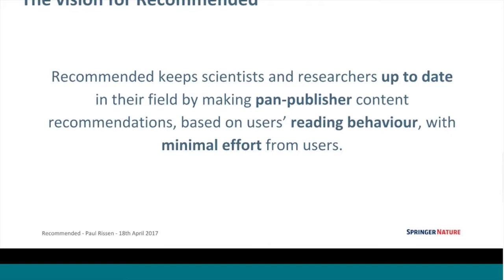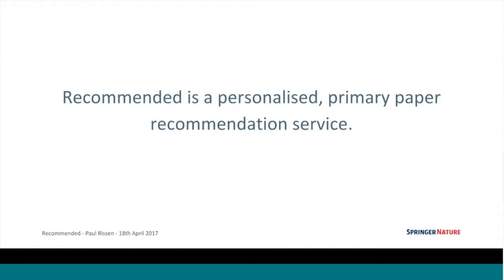It's important to note that we make pan-publisher recommendations — we don't just recommend content from Springer Nature, we'll recommend content from across the corpus. We base this on users' reading behavior, so rather than content-focused recommendation systems that recommend based on what you're looking at at any particular time, this is based on your past activity across Springer Nature websites. We want to do this with minimal effort from users, without requiring them to fill in lots of forms or tick lots of boxes. It's a personalized primary paper recommendation service.